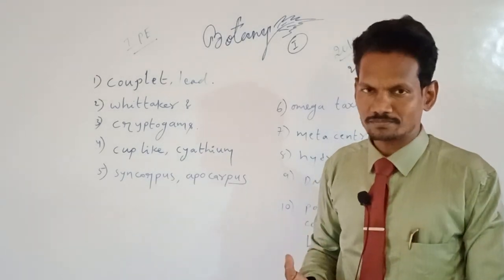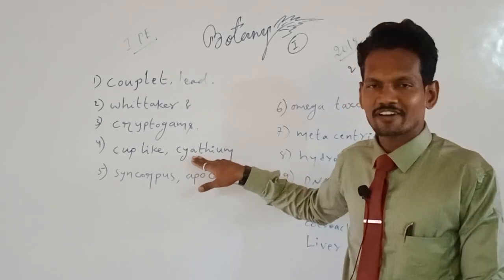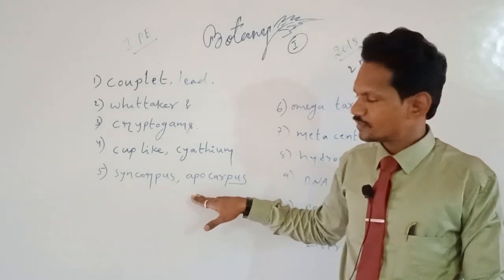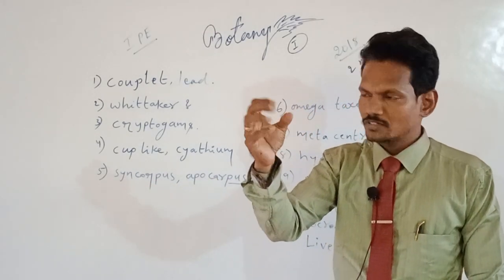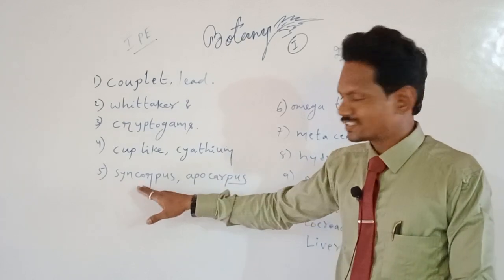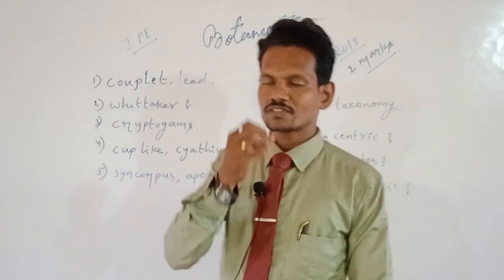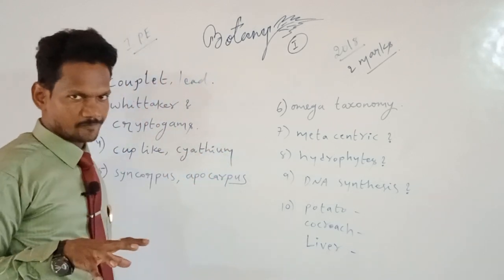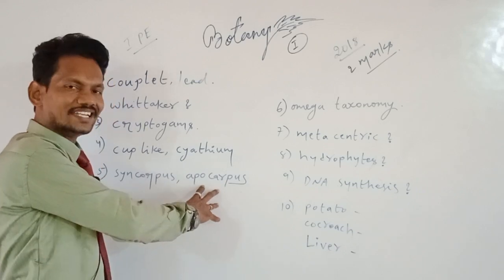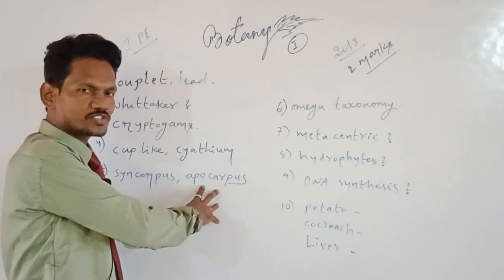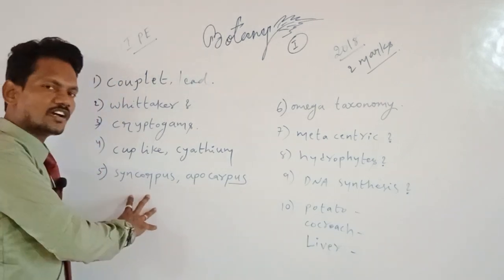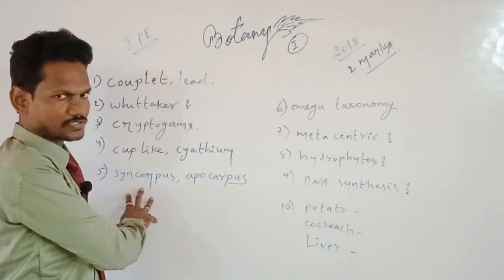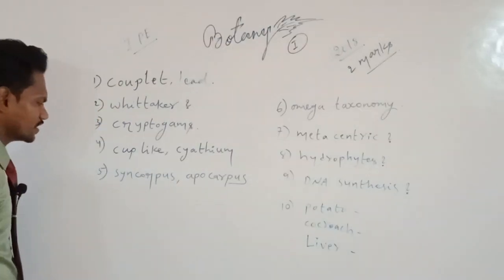Fifth question: syncarpous versus apocarpous. Syncarpous means fused or united carpels together. Apocarpous means separated or free carpels — 'apo' means free. So free carpels in an ovary are apocarpous. Examples include tomato and mustard.